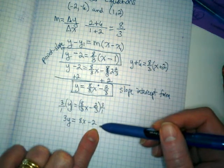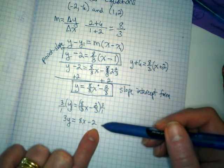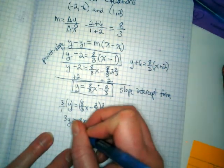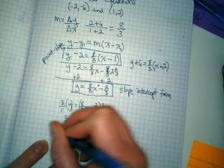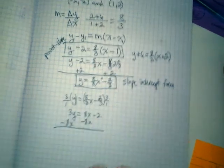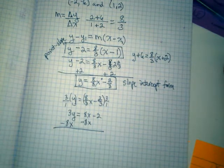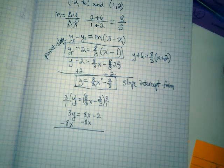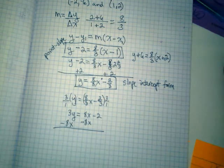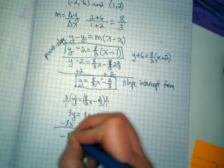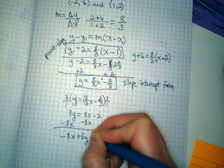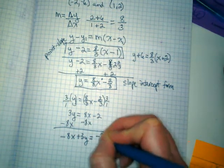We lost him. He wishes he was at the Sounders Parade and not doing algebra right now. Why am I subtracting the eight x? I want to get the x on the other side. And now, negative eight x plus three y equals negative two.